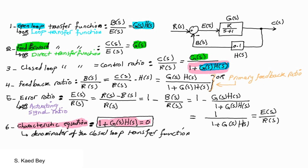Before analyzing feedback systems, in the next video we will introduce the rules for reducing block diagrams. This will allow us to arrive at the canonical feedback control system, where we will be able to find the characteristic equation and apply our analysis.